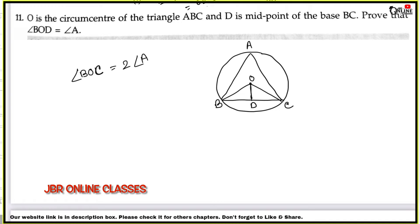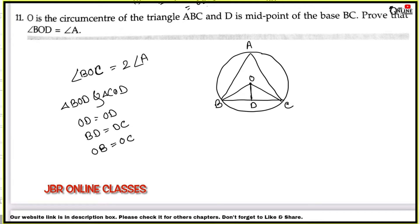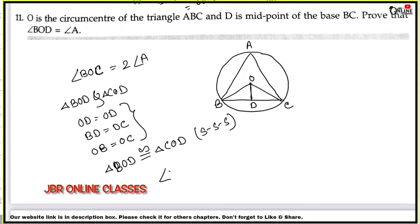Since D is the midpoint of BC, consider triangles BOD and COD. OD equals OD (common side), BD equals DC (D is midpoint), and BO equals CO (radii of the same circle). By these three conditions, triangle BOD is congruent to triangle COD by SSS.